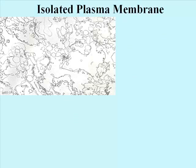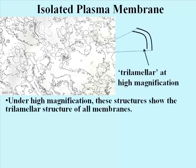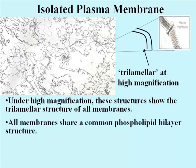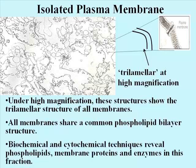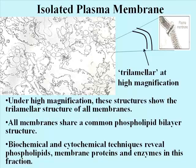The plasma membrane can be fractionated as a relatively high speed supernatant in a cell fractionation. The TEM here shows such an isolate. At high magnification, membranes seem to be composed of three layers — this is called the trilamellar structure, and at the molecular level it is the more familiar phospholipid bilayer. Studies reveal that the plasma membrane, indeed each different type of membrane in cells, contains unique molecules that can perform specific functions. Do you remember any of the specific functions performed by a plasma membrane in a eukaryotic cell? Think about that, and maybe we'll address some of these questions in class.